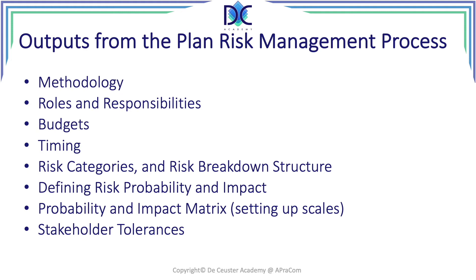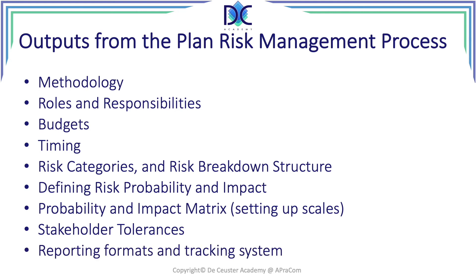We look at stakeholder tolerances — it's very important to understand what those stakeholder tolerances are for our project. It can be different than other projects, so we have to see how tolerant the stakeholders are related to risks. We look at a reporting format and we also have a tracking system. We have to set up how we are going to report and how we are going to track those different elements related to risks. We may use the same format for all projects, but it is possible that for our project we need to focus on different things, so we create a reporting format specific to our project.